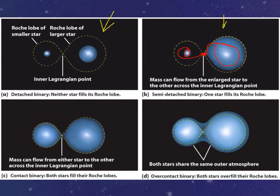Because remember, mass at that midpoint, at the Lagrange point, can actually go from one star to the other. So that's what we call a semi-detached star.